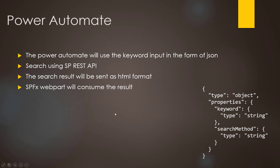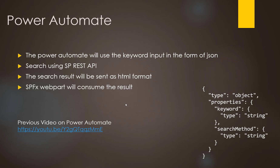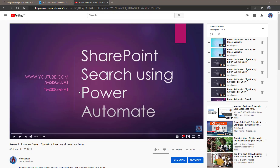This is the JSON format you will look at in Power Automate — a keyword is passed from the SPFX web part and the result is returned as an HTML file. I've already created another video on my channel covering how to completely build this Power Automate step by step — I'll post the URL in the video description. In this video, I'm going to extend that same Power Automate to accept an HTTP request and send back an HTTP response as an HTML file.